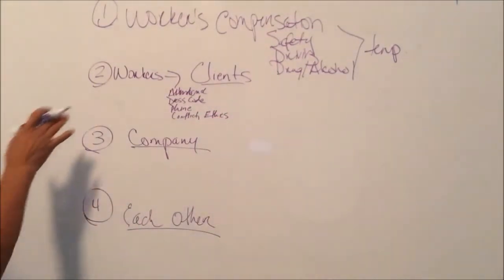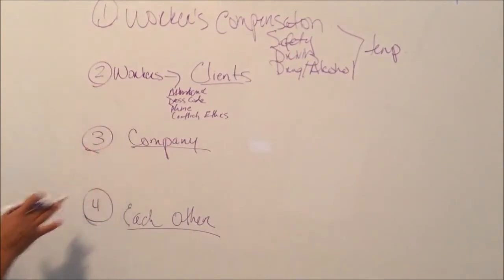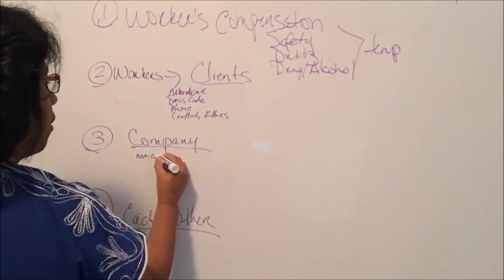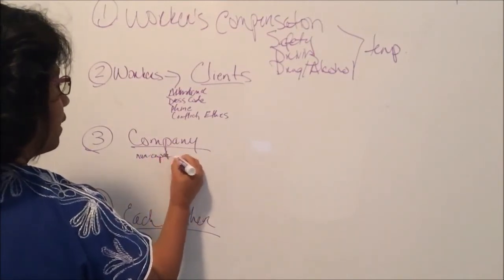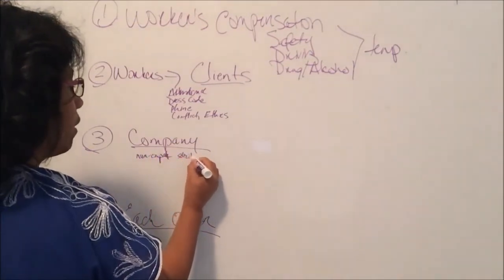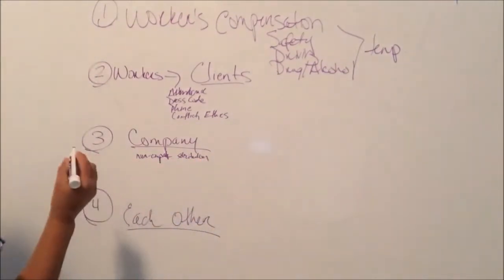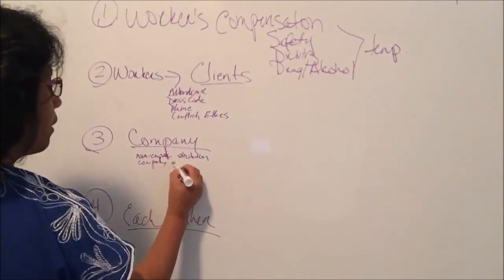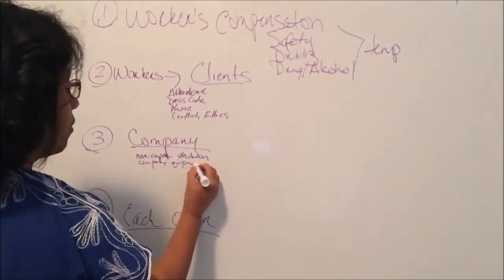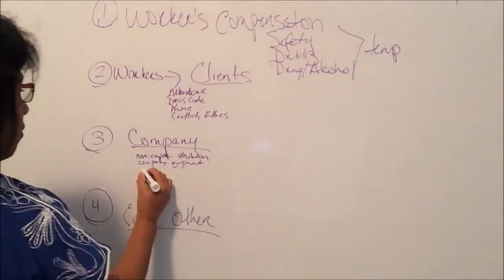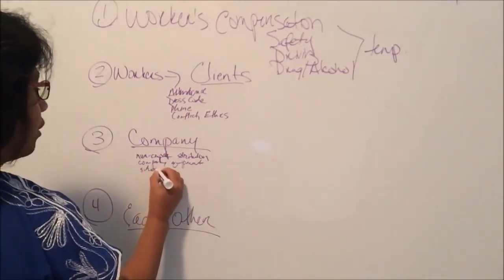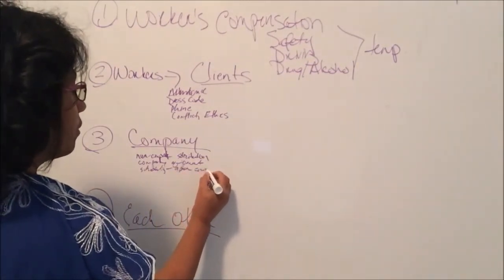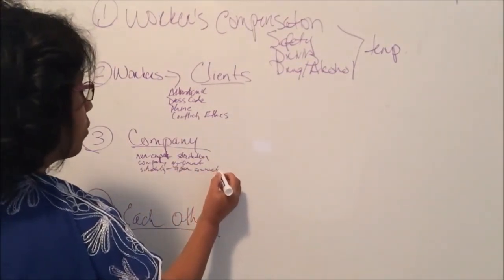When you're thinking about how you want your workers to comport themselves as it relates to you as a company, this is where your non-compete or your non-solicitation clause might come in. Maybe where you'll talk about company equipment and supplies. You're going to talk about their scheduling and just open communication in general. If you have an open door policy, what that looks like.